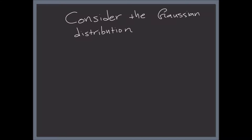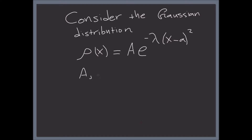Consider the Gaussian distribution: rho of x equals A times e to the minus lambda times (x minus a) squared, where A (big A), a (small a), and lambda are constants.